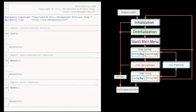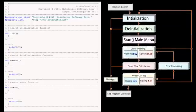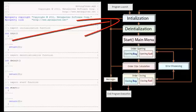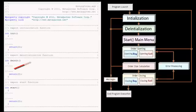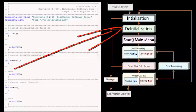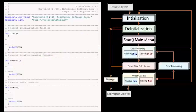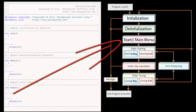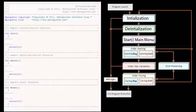Now we're going to go over the ExpertAdvisor command structure. The chart on the left shows the programming code, and the schematic on the right shows a block diagram of how it works. First is the initialization step, which sets the initial variables. Next is de-initialization, which runs when you remove the program from the chart. Then the Start function is where top-down code executes. In the next video we'll describe this top-down process for opening a buy order, calculating the lot size, closing the buy order, and repeating the sequence until we have a trade.